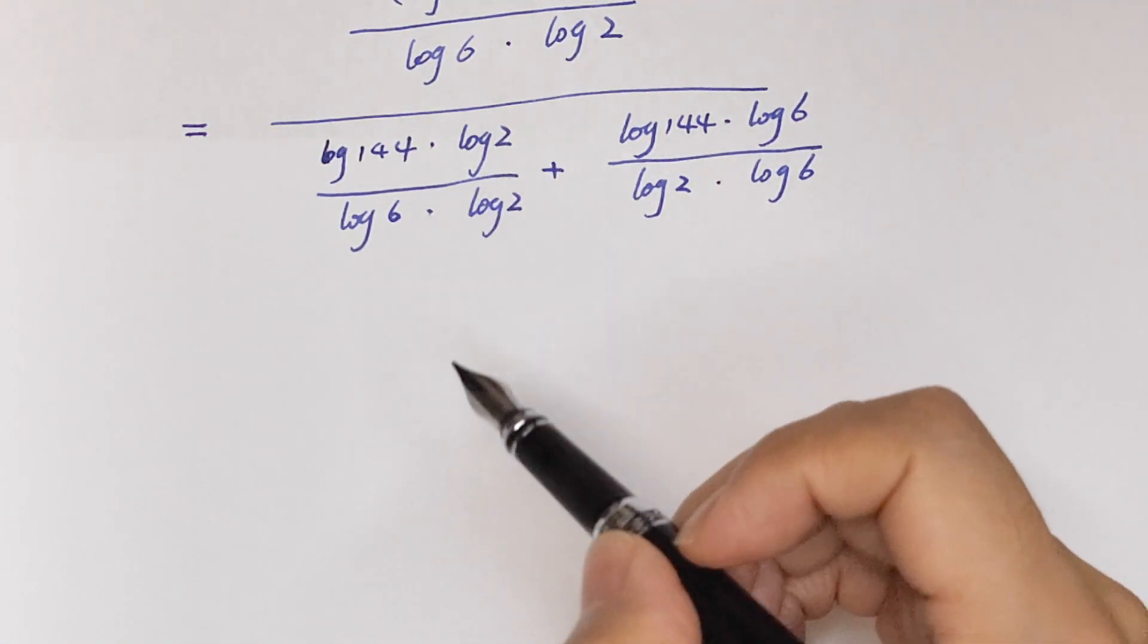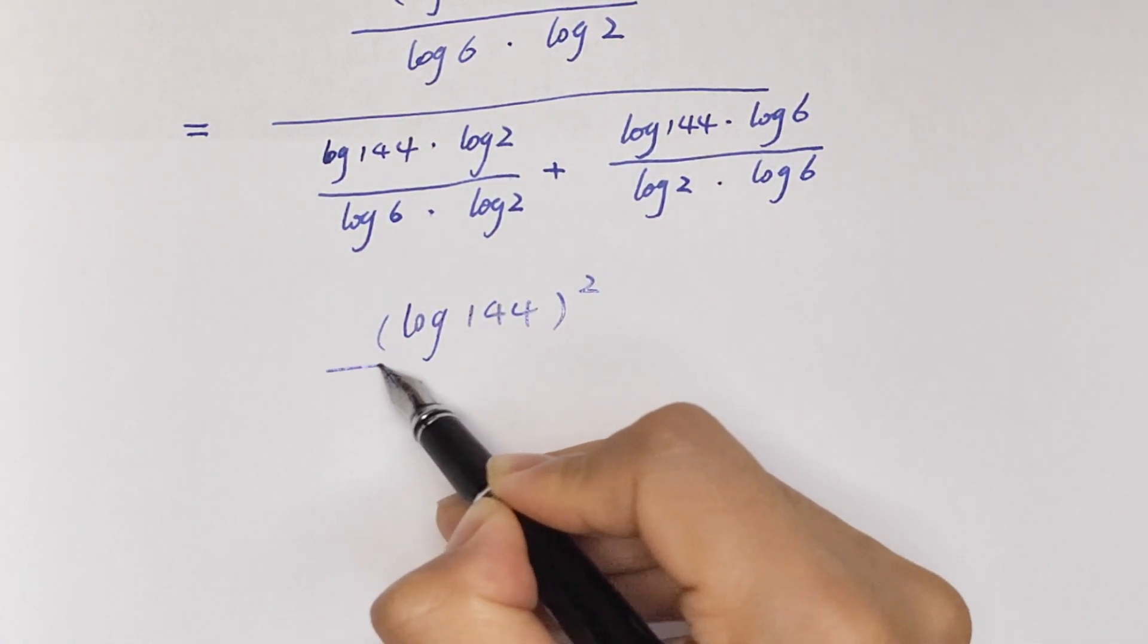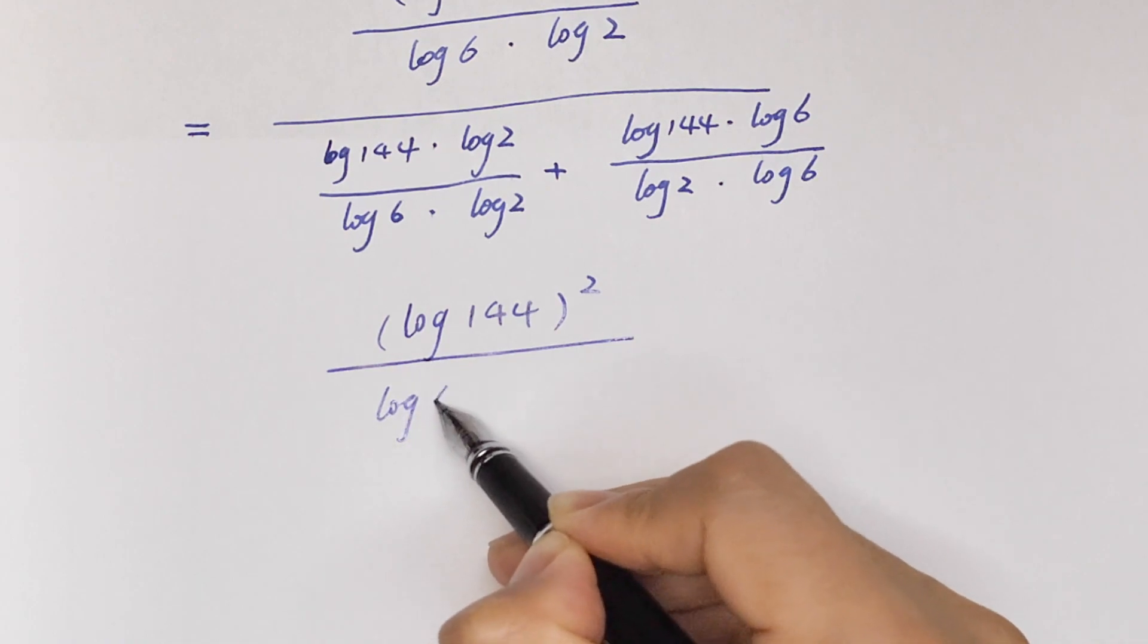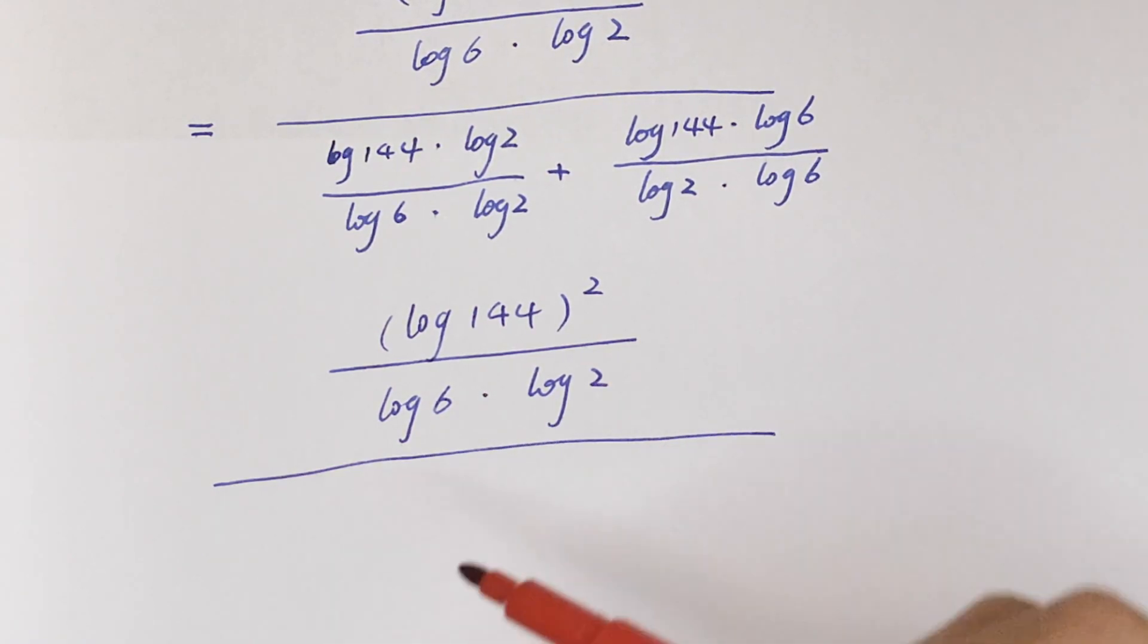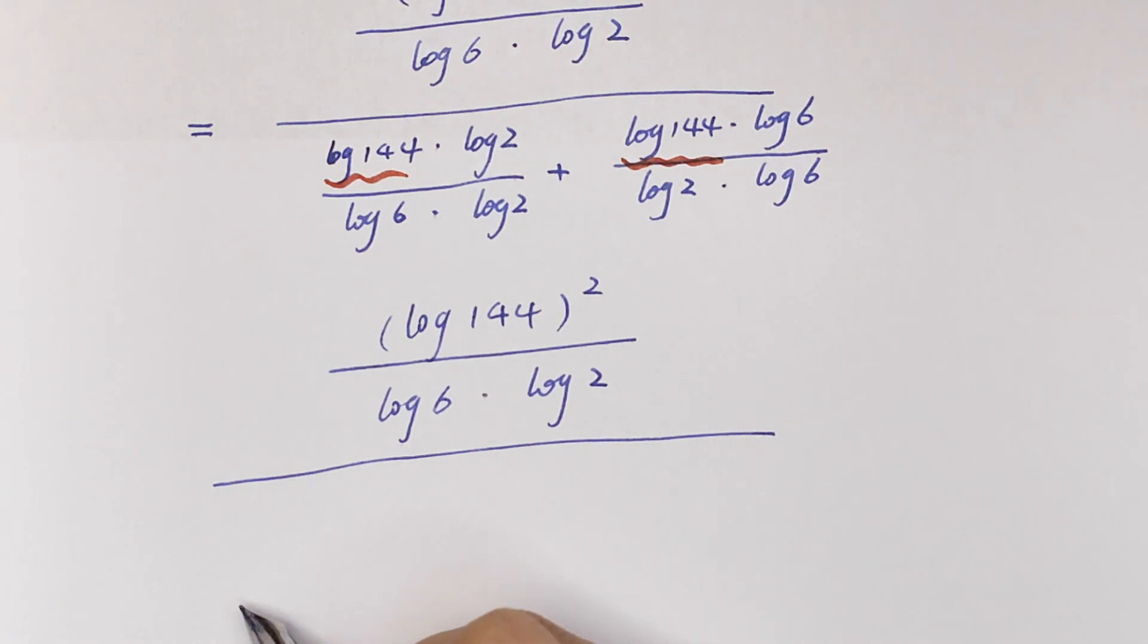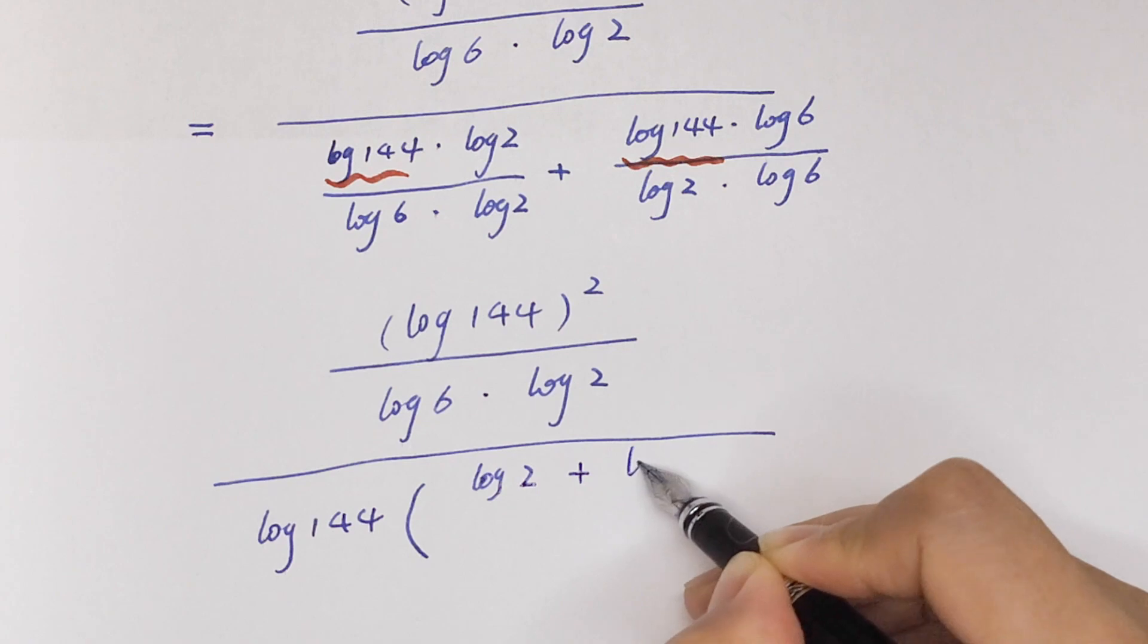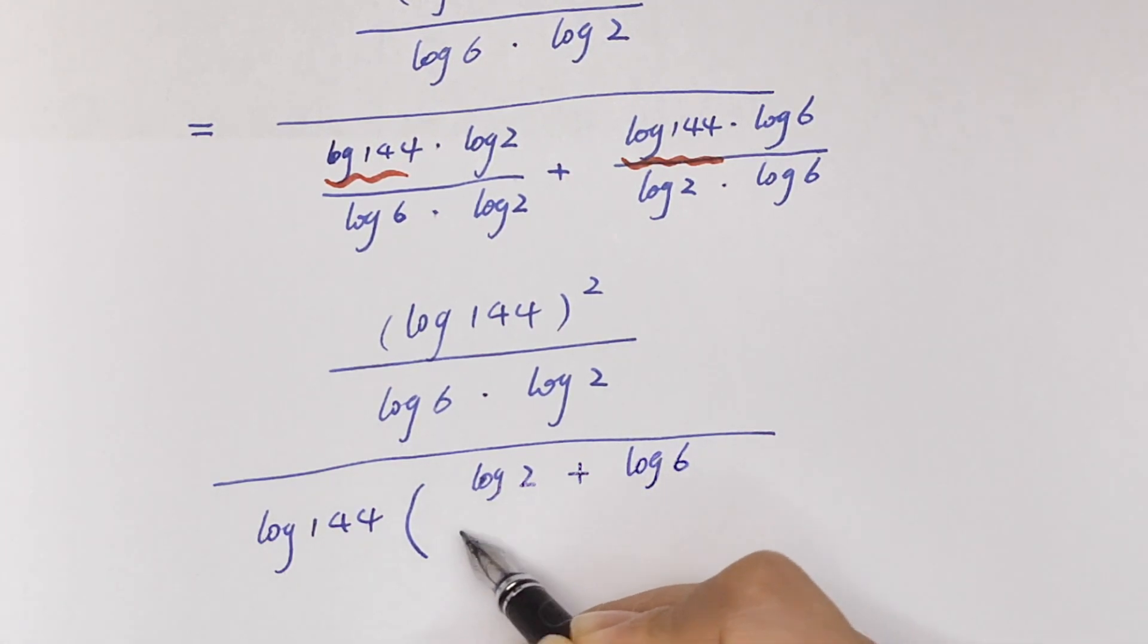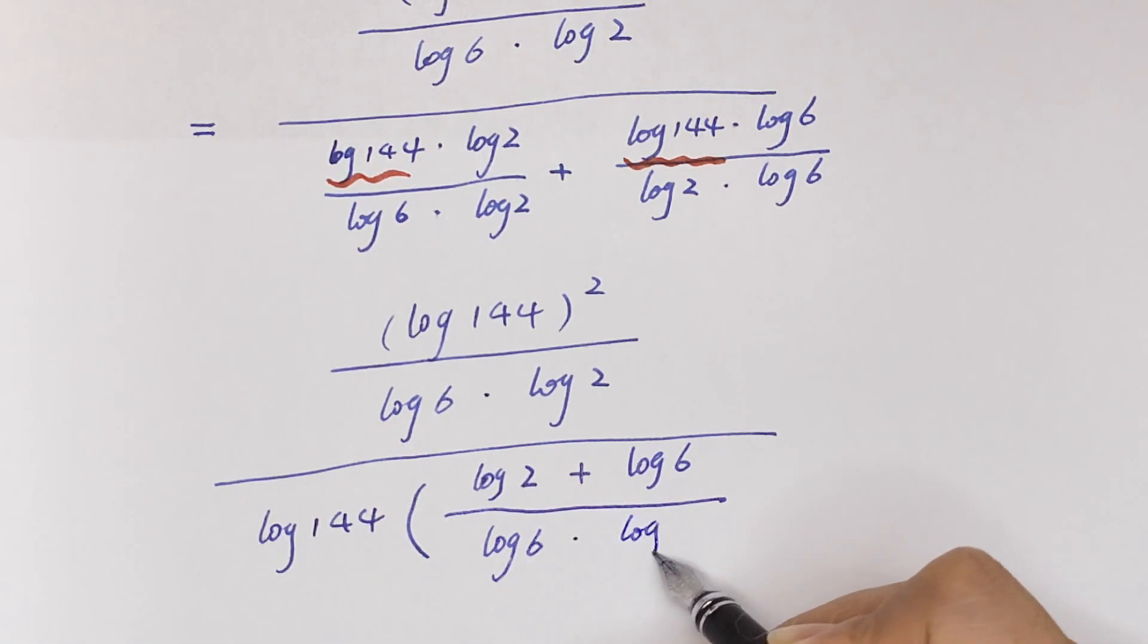In the numerator, log 144 squared over log 6 times log 2. In the denominator, we take out log 144 as a common factor: log 144 times log 2 plus log 6 over log 6 times log 2.